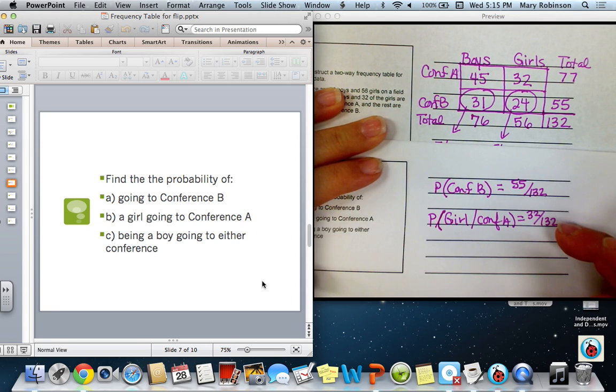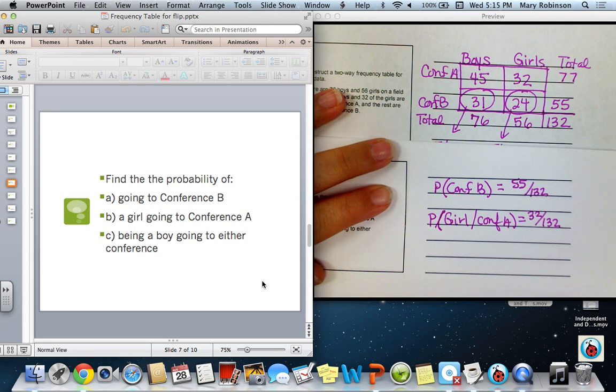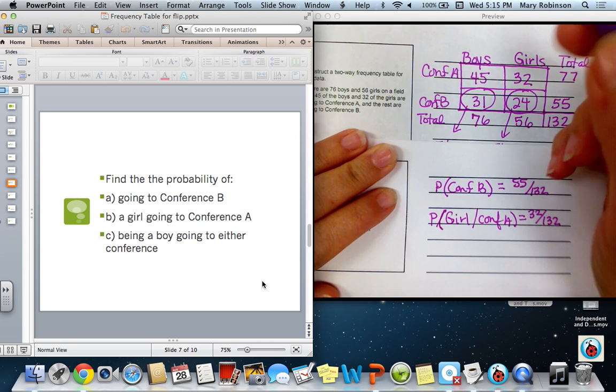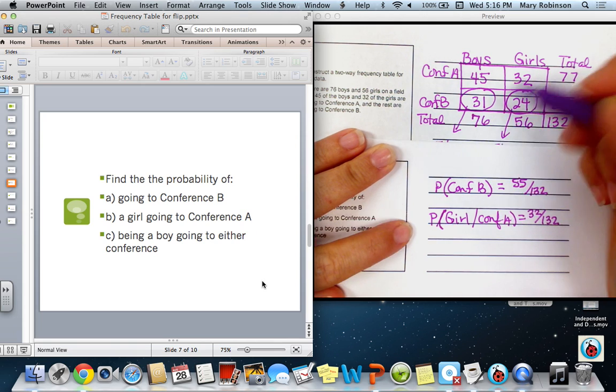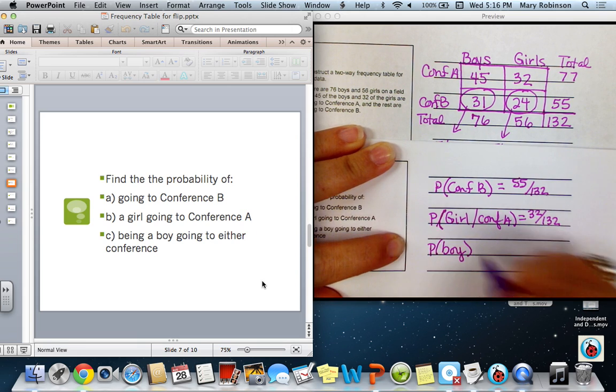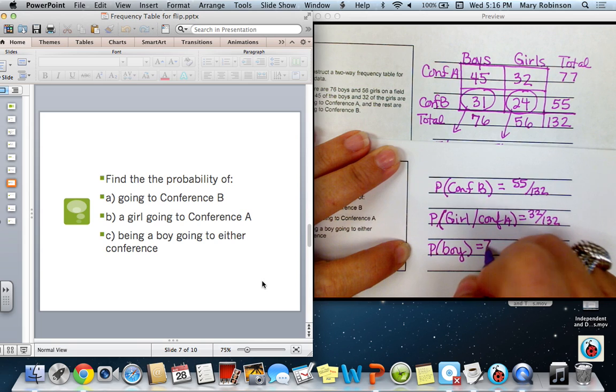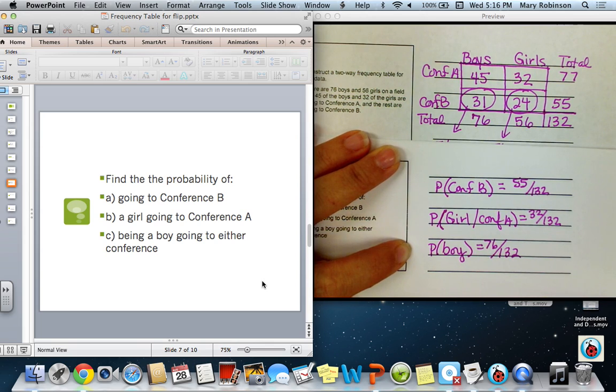Next, we are asked to find the probability of a student being a boy going to either conference. So that means Conference A or Conference B. So because it does not specify and actually includes both, we would want to use our total. So the probability, basically, of a boy, since it doesn't matter which conference they attend. So our total was 76 over the total possible, which is 132.